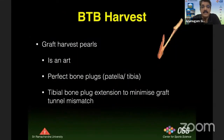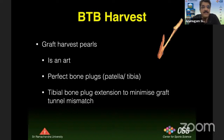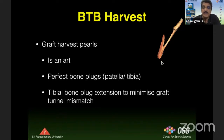Even with these strong points, many problems are associated with the BTB, such as donor site morbidity, and more of a technique challenge — because graft harvest requires harvesting perfect bone plugs both in the patella and the tibia, and the tibial bone plug extension must be precise to minimize graft-tunnel mismatch.